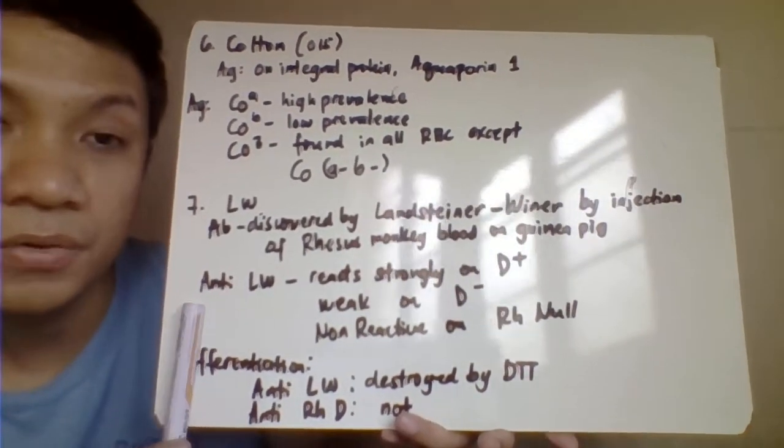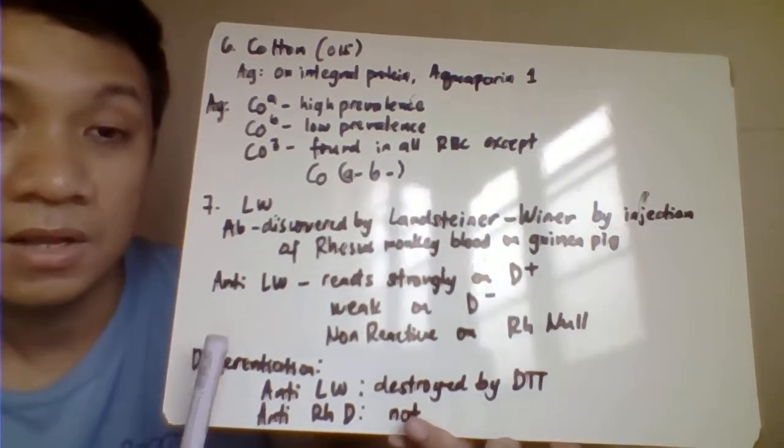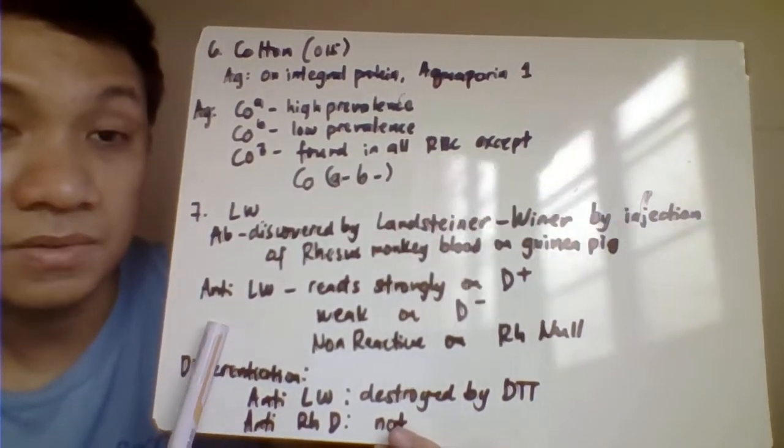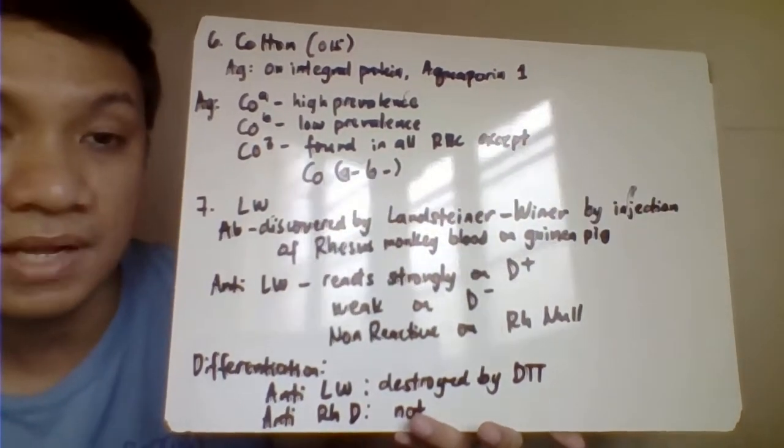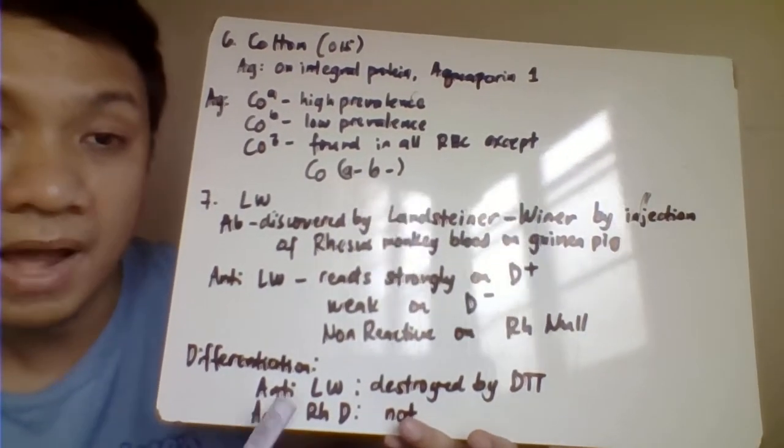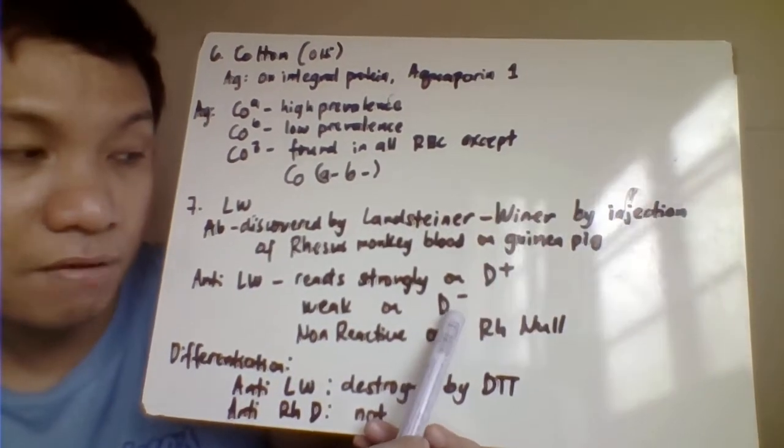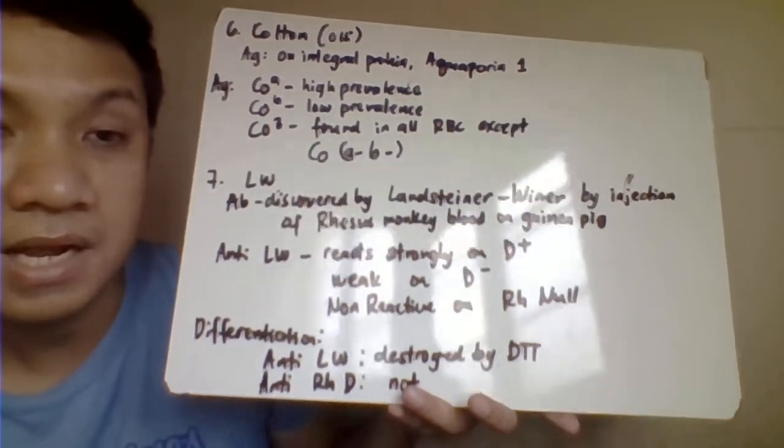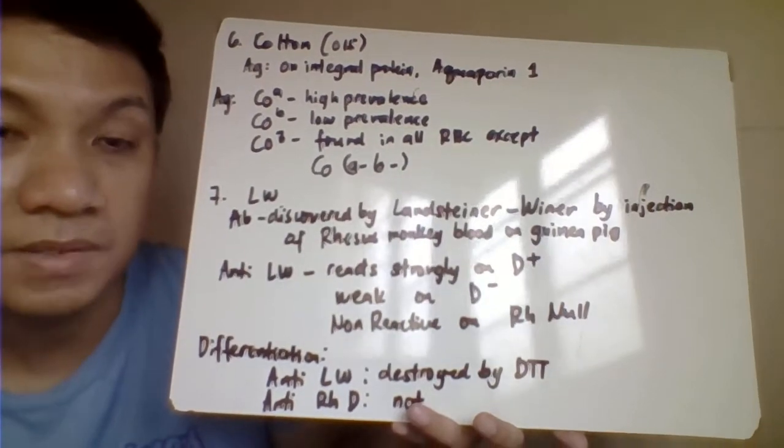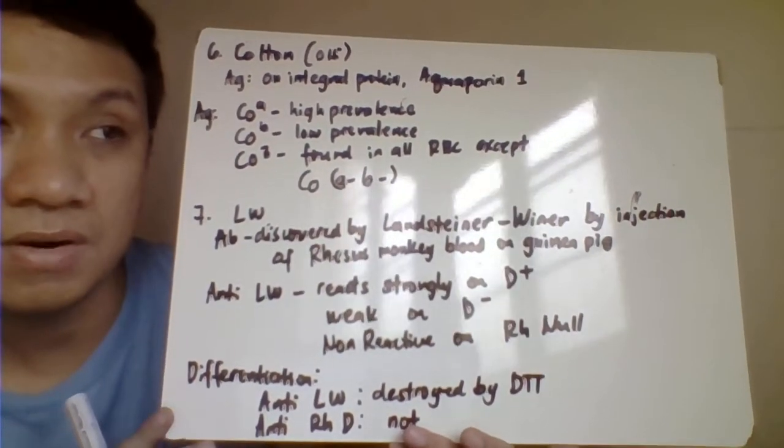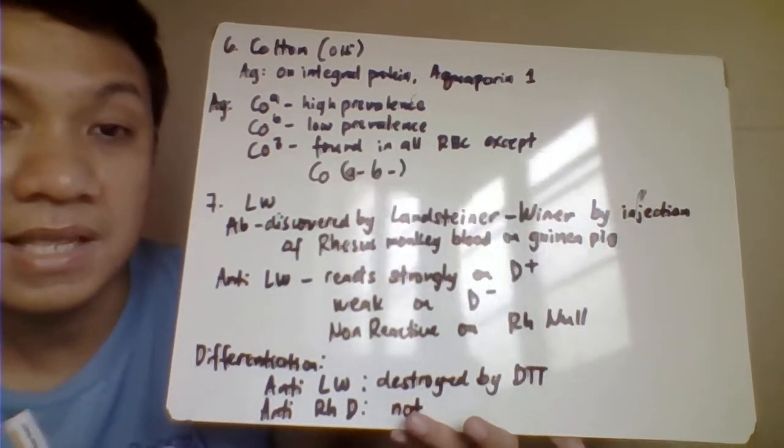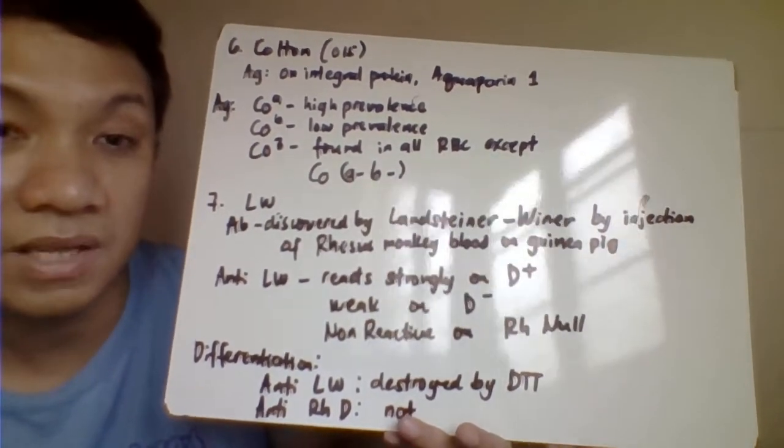Anti-LW is closely related with the RH blood group system, in which anti-LW reacts strongly with the D positive cell, weakly reactive with your D negative, but anti-LW will not react in the RH null RBC membrane. When we say RH null, that one is your RH D, C, and E negative, or the absence of that is RH null.